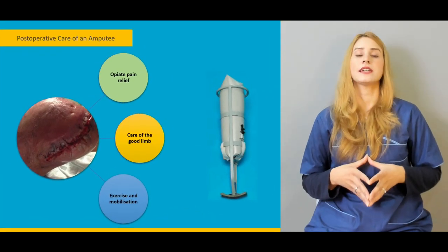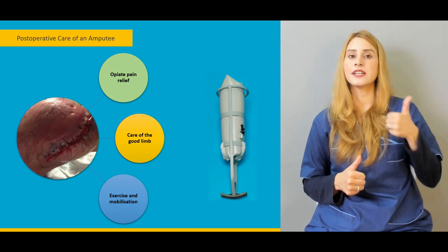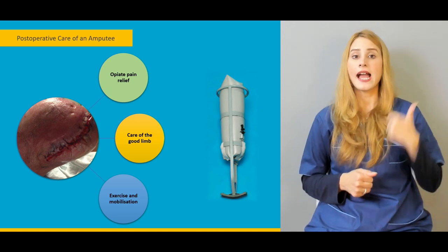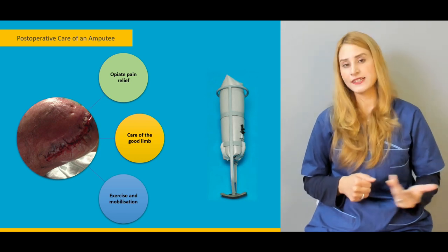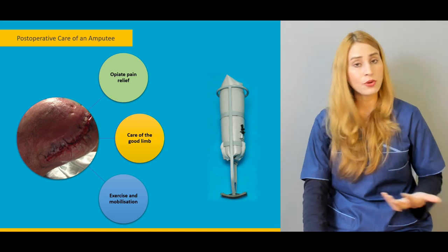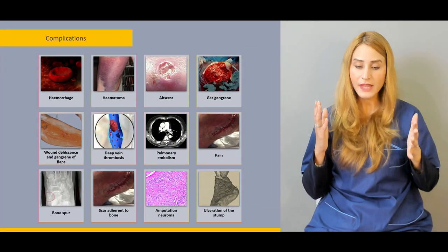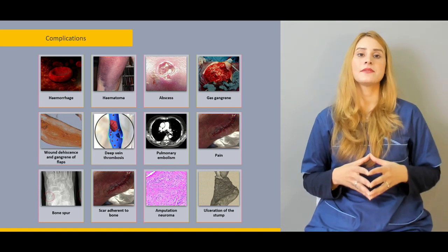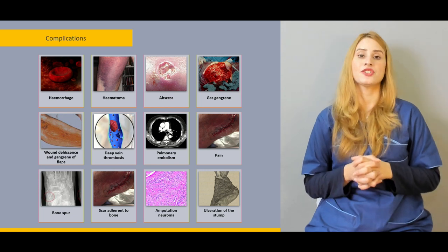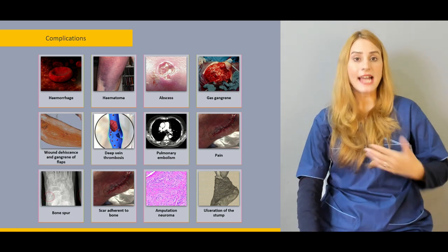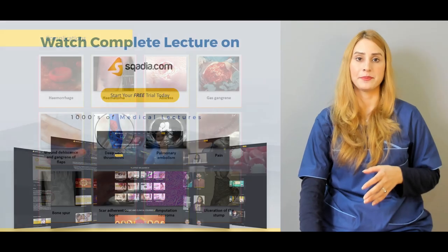Then we'll discuss the post-operative care of the amputated limb — how to deal with post-operative pain, how to take care of the residual limb, exercise and mobilization, the role of physiotherapy, and how to avoid DVT and other complications. At the end, we'll discuss in detail the complications related to amputation and how to psychosocially rehabilitate the patient after amputation.